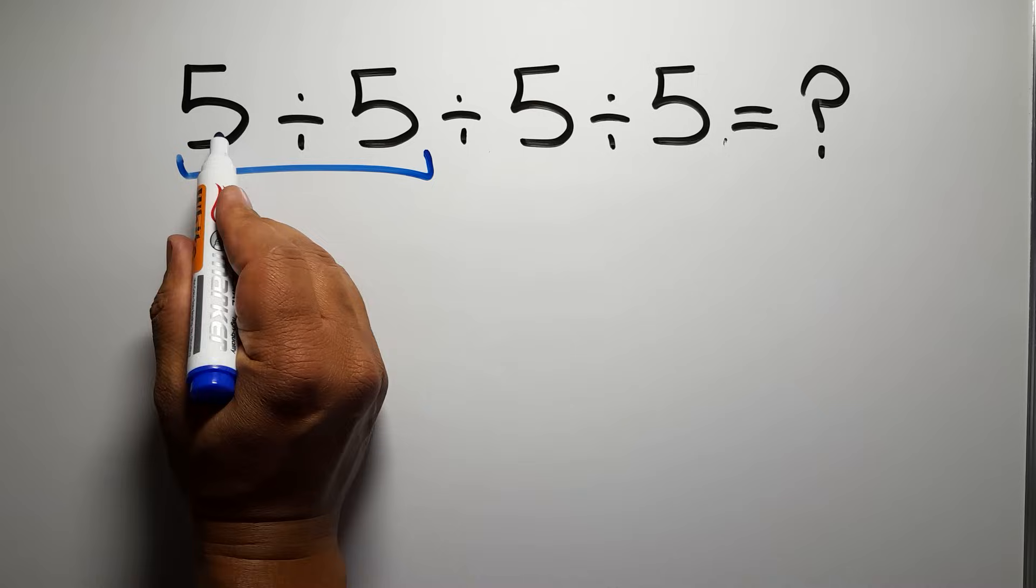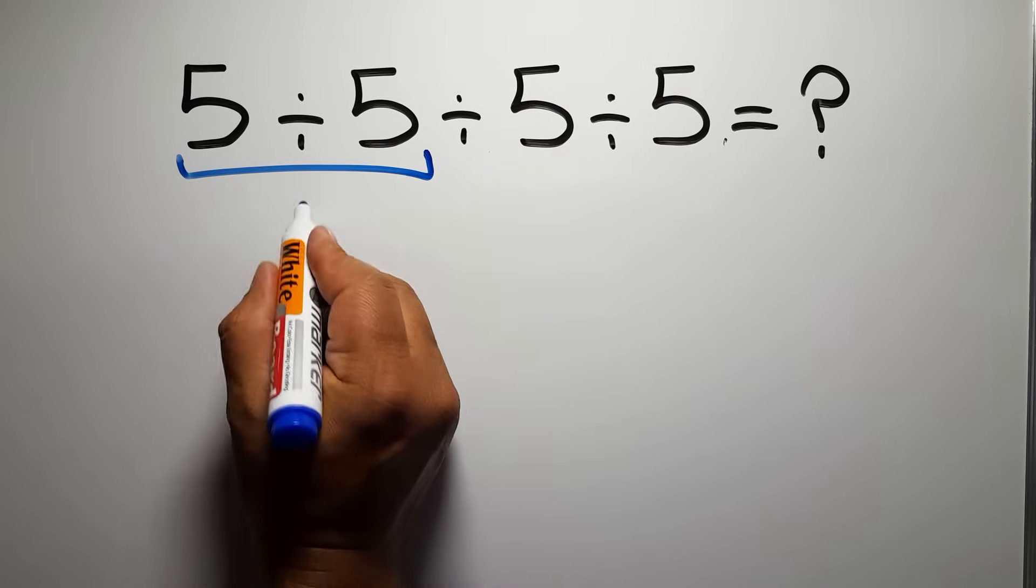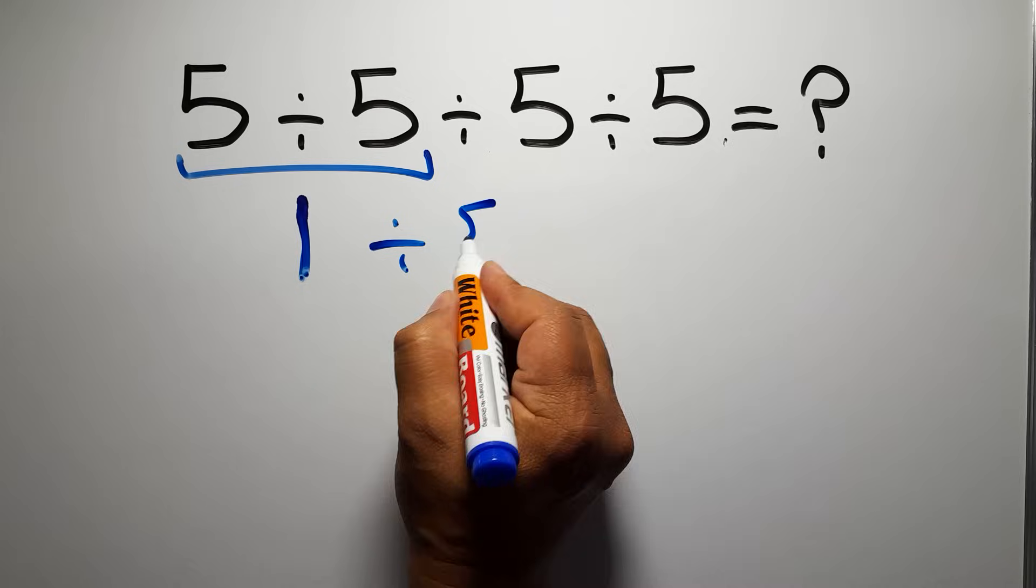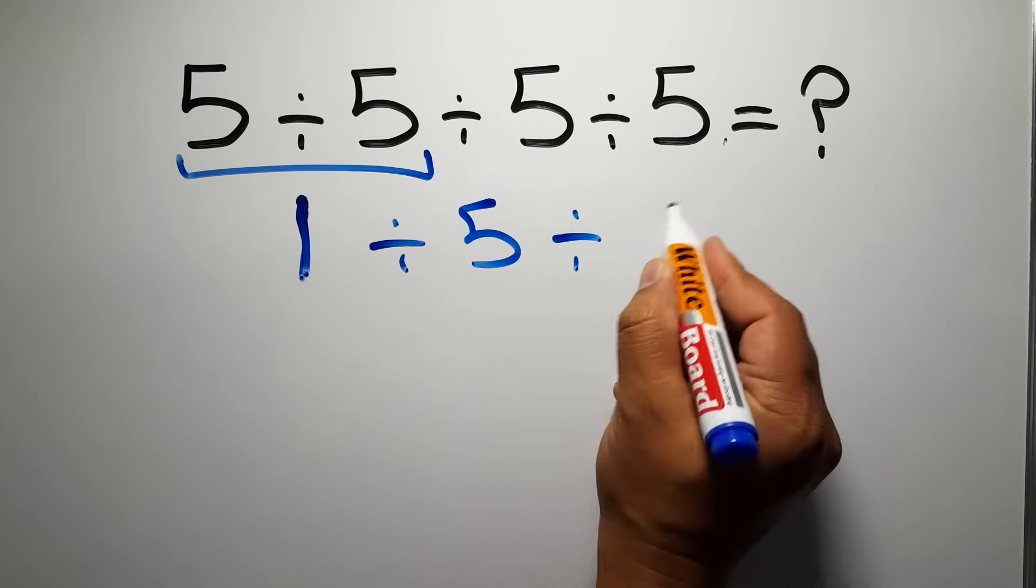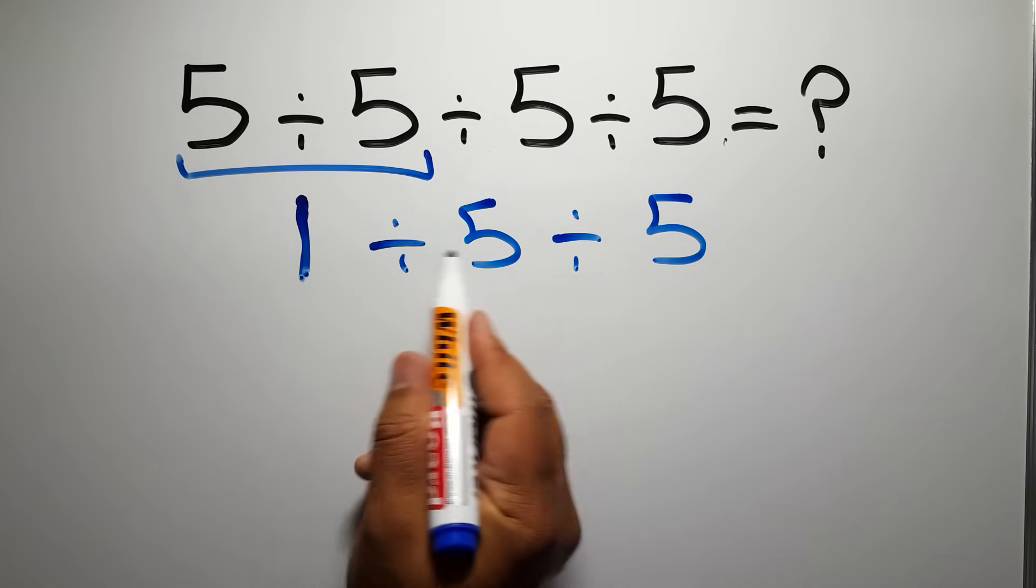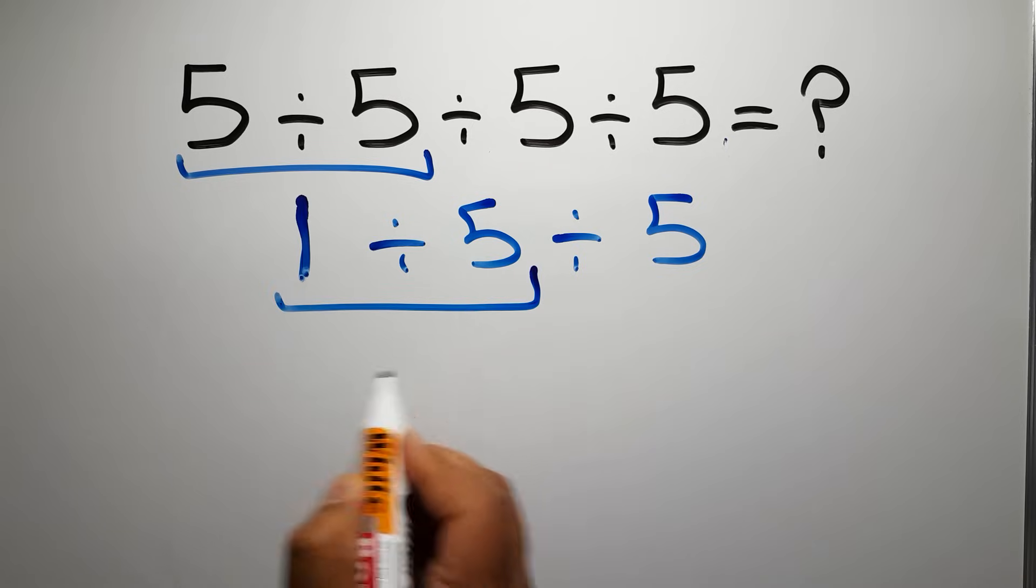So first, 5 divided by 5 gives us 1. We have 1 divided by 5 and again divided by 5. Now we have to do this division. 1 divided by 5 can be written as 1 over 5.